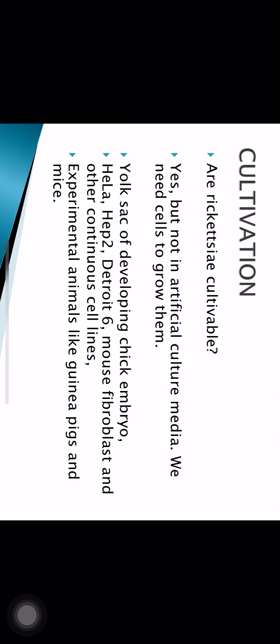Rickettsia can be cultivated. They can be grown in the yolk sac of chick embryo, in cell lines such as HeLa cells, Hep-2 cells, and L-929 mouse fibroblasts, or in experimental animals such as guinea pigs and mice. So yolk sac, cell lines, and experimental animals — these three can be used for growing Rickettsia.